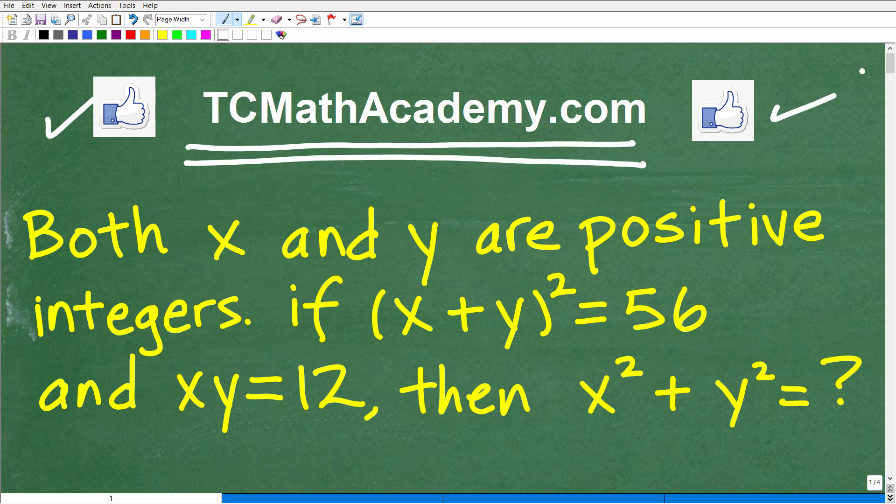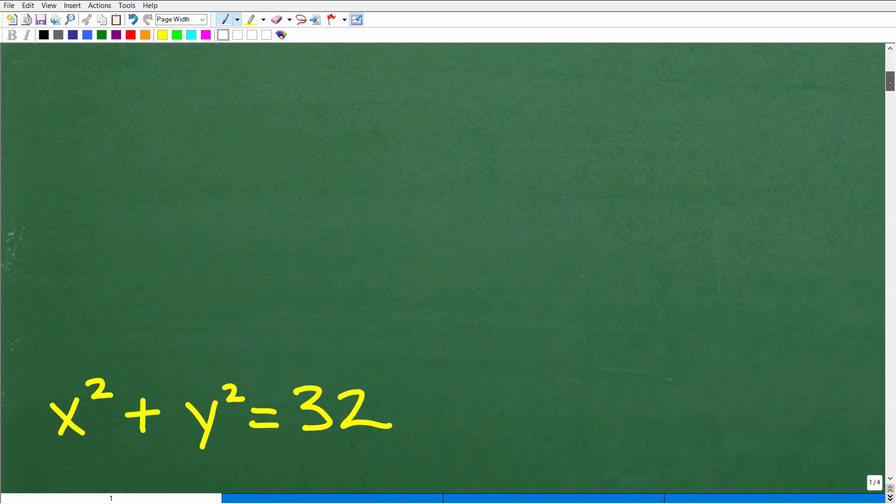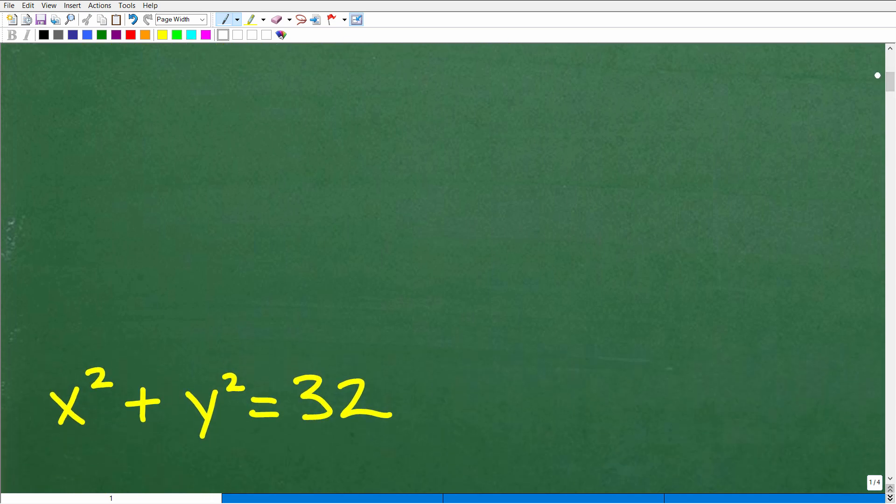Okay, so again, we have this lovely algebra problem. Both x and y are positive integers. If (x+y)² = 56 and xy = 12, then the question is, what is x² + y² equal to? Let's go ahead and take a look at the answer right now. The solution is the following. x² + y² is equal to 32.